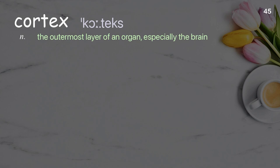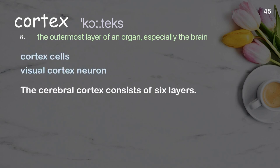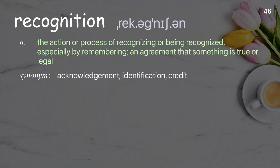Cortex: the outermost layer of an organ, especially the brain. Examples: cortex cells, visual cortex neuron, cerebral cortex. The cerebral cortex consists of six layers.